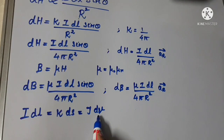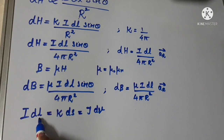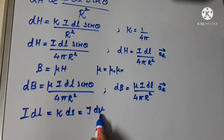Here dL, dS, and dV are the differential line element, differential surface element, and differential volume element.